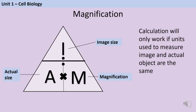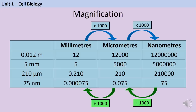For magnification calculations, use the triangle: magnification = image size ÷ object size. The image size is what you measure on the exam paper; the object size may need to be calculated using a scale bar. Make sure units are the same for both measurements — convert if needed. All unit conversions involve multiplying or dividing by a thousand: there are 1,000 micrometres in a millimetre and 1,000 nanometres in a micrometre.